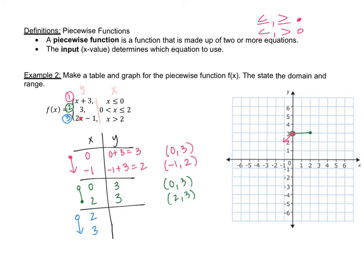Plugging two into the third equation: 2 times 2 minus 1 equals 4 minus 1, which is 3. Plugging in three: 2 times 3 minus 1 equals 6 minus 1, which is 5. So now we have coordinates (2, 3) and (3, 5).